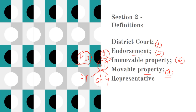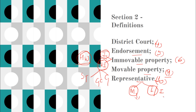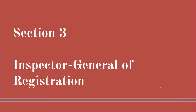Movable property includes standing timber, growing crops, grass, fruit, juices in trees, or any property that is not immovable property. The last important definition in section 2 is in subsection 10, which defines 'representative.' Representatives are defined for two persons: a minor and a lunatic or idiot. For a minor, the representative is their guardian; for a lunatic or idiot, the representative is their legal curator or committee.